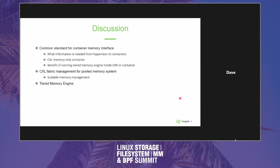CXL opens up new classes of media and there could be read/write asymmetries. Looking at persistent memory before — the NUMA distance didn't work because there was a read/write asymmetry. We need to advertise that up to applications so they know and can act on this information.